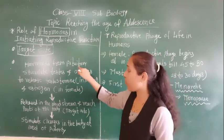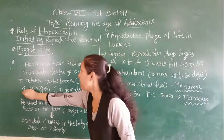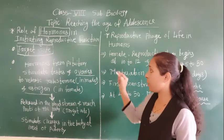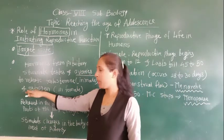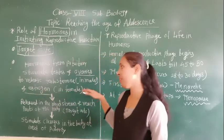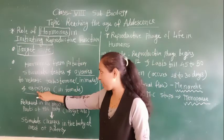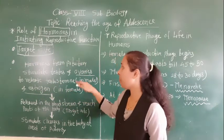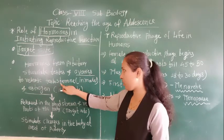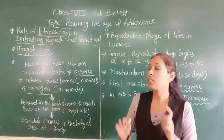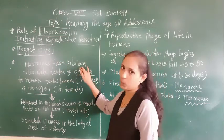Hormones from the pituitary gland stimulate the testes and ovaries to release testosterone in males — testosterone is the male sex hormone. Similarly, in females, because of hormones from the pituitary gland, the ovaries get mature and start to secrete the female sex hormone, progesterone. In males, the testes get mature and start releasing testosterone — all of this happens because of the hormones secreted by the pituitary gland.